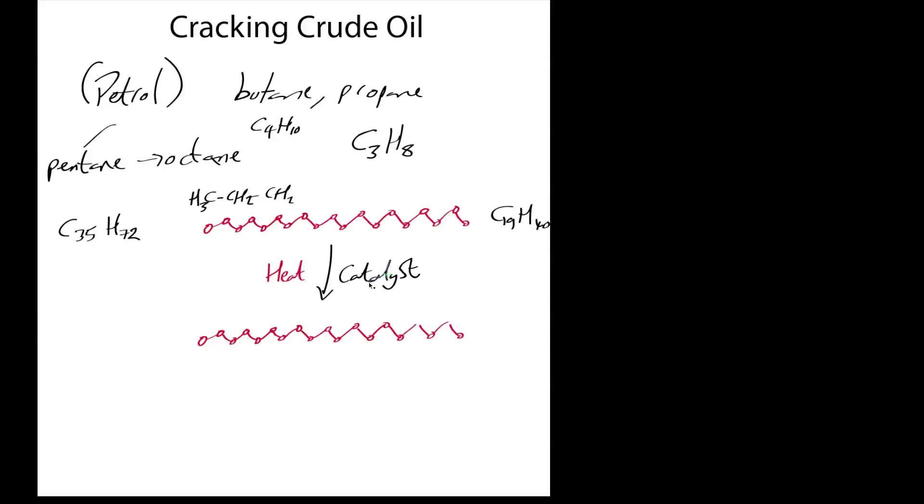You take a long chain molecule like that, heat it over a catalyst—the catalyst is actually aluminium oxide. I won't go into details of how aluminium oxide works, but a catalyst makes this a more efficient process. What it does is break the molecule apart, so the molecule starts off as a long molecule and then breaks apart into smaller pieces.